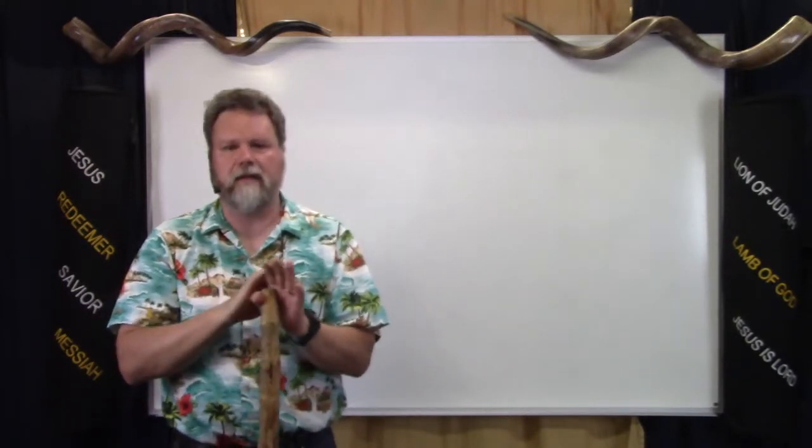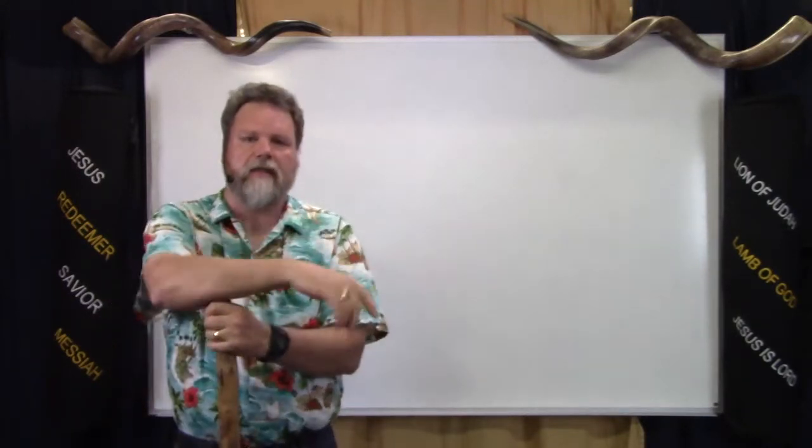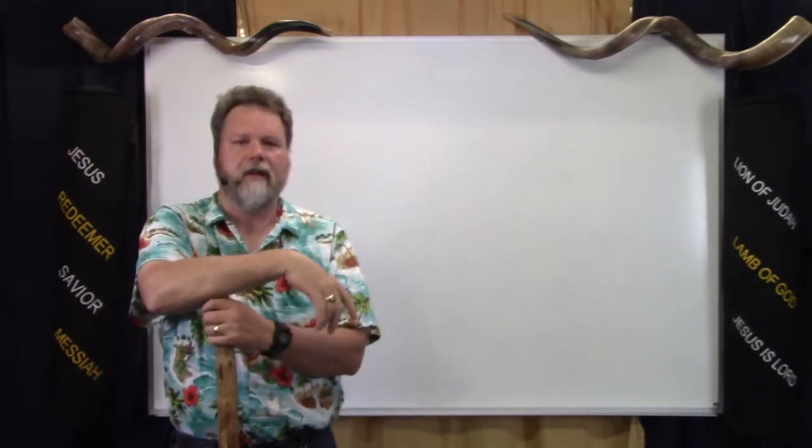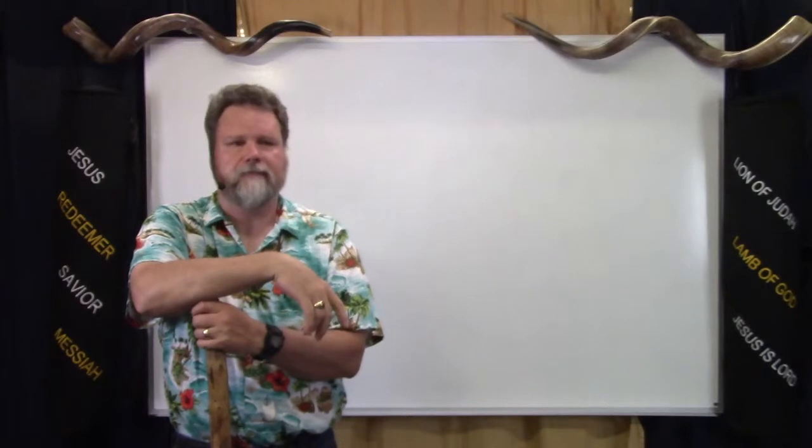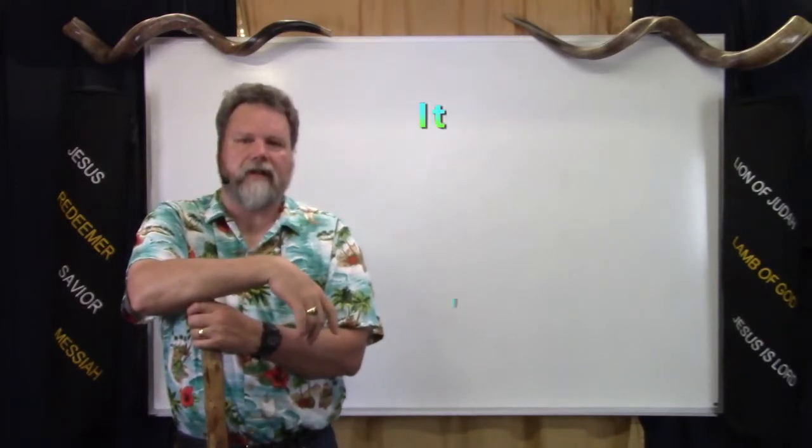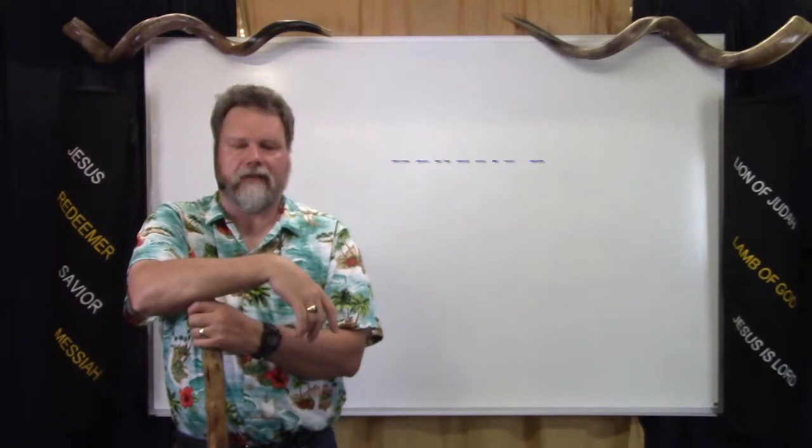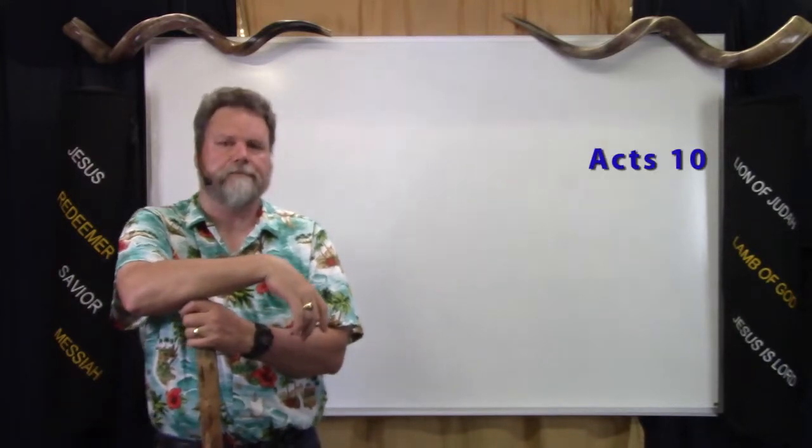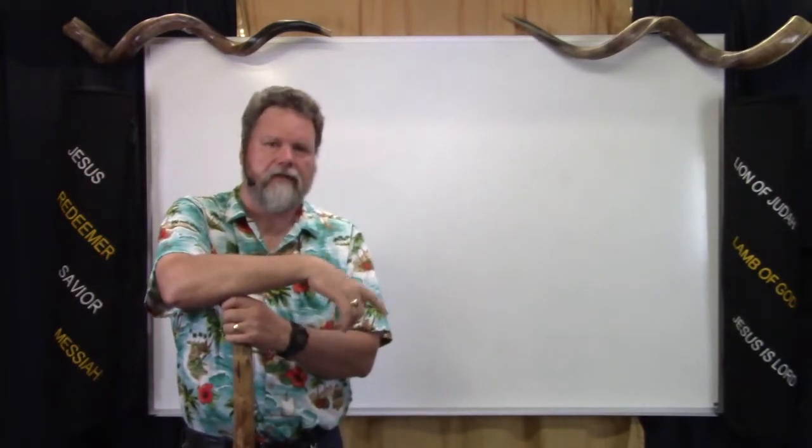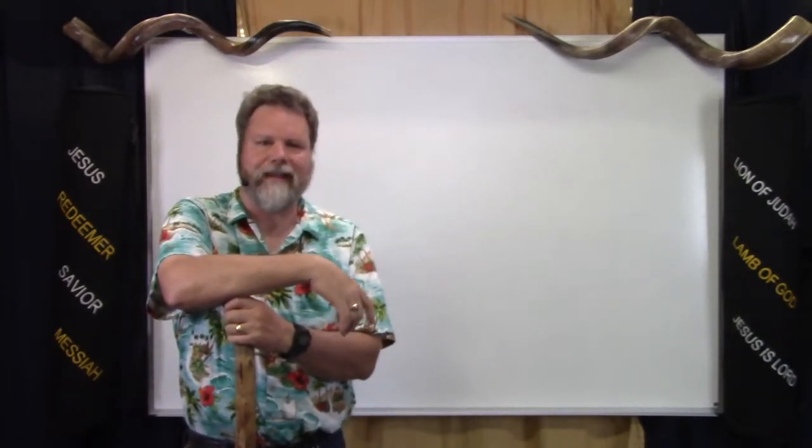In the previous video we looked at the objections of Judaizing, the crucifixion changed everything, and shadows. In this video we'll look at the concept of everything is clean, or as I like to call it, it's all good. It's all good is from Genesis 9 and Acts 10 as the main scriptures.